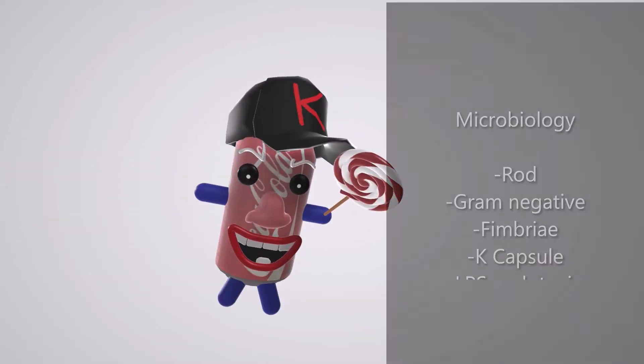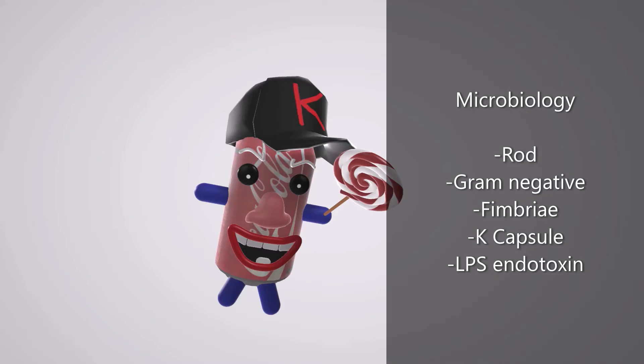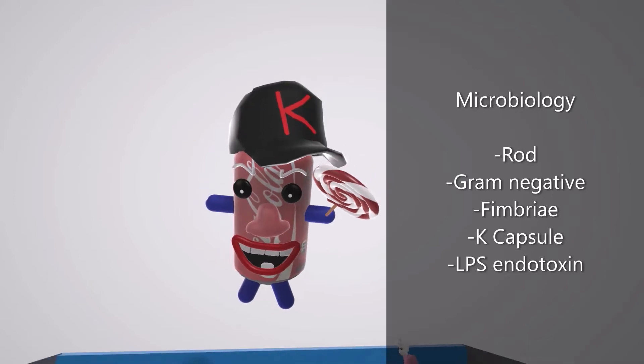We notice this guy over here is a rod, as E. coli is a bacteria that's a rod. And it's red because it's gram negative — it stains red or pink in gram staining. We also notice his arms and legs are sort of like projections, which reminds us of the fimbriae of E. coli. E. coli have fimbriae which permit its adhesion to host cells. You might have noticed that he's wearing a cap to help us remember that E. coli is encapsulated, and specifically it's got a K on it to help us remember the K capsule.